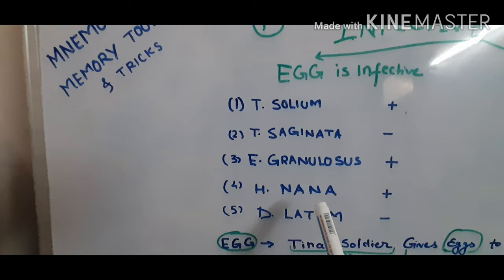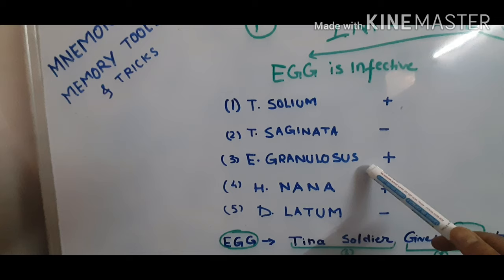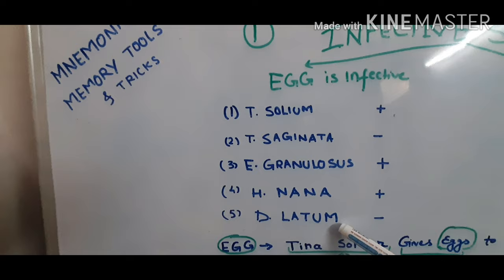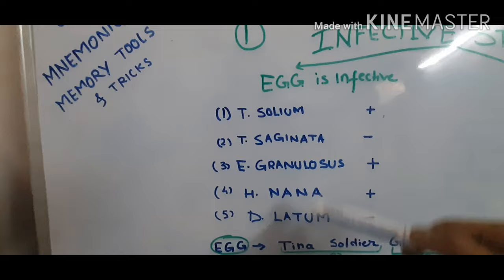The five parasites we are discussing are: Taenia solium, Taenia saginata, Echinococcus granulosus — which causes hydatid cyst disease in the liver and lungs — H. Nana, and D. Latum. Some have egg as their infective stage and some have larva.